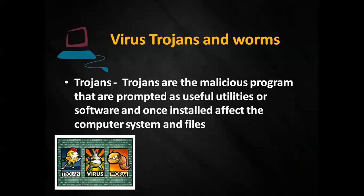The next one is the trojan. Trojans are malicious programs that are presented as useful utilities or software, and once installed they affect the computer system and files. The name 'trojan' comes from a historical story. This type of virus pretends to be a useful program, and once it enters the computer system it starts causing disturbances to programs and program files. For example, you might find free games or free apps online — these appear useful and attract you, but once you install them, the virus also enters your computer system along with them.